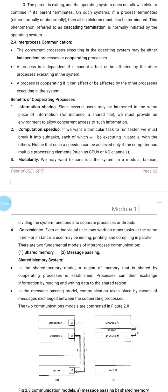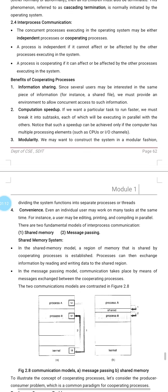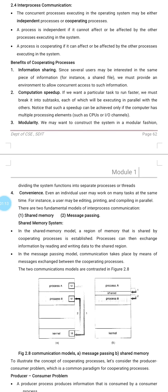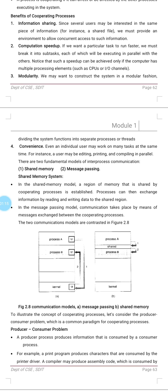Cooperating processes are those processes which can affect or be affected by other processes. Taking the same example of P1 and P2, if a modification made to P1 is affecting other processes, then it is called a cooperating process. Now let's look at the benefits of going for cooperating processes — why we prefer them.